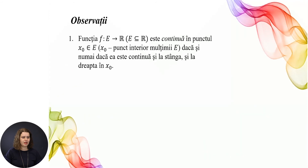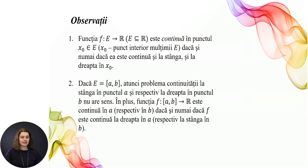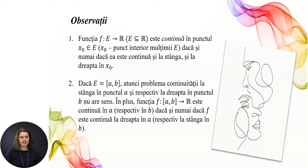Observați! Funcția f din E în R, unde E este o submulțime a lui R, este continuă în punctul x₀ care aparține lui E, x₀ un punct interior mulțimii E, dacă și numai dacă f este continuă și la stânga și la dreapta în x₀. Dacă E este egal cu segmentul [a, b], atunci problema continuității la stânga în punctul a și respectiv la dreapta în punctul b nu are sens. În plus, funcția f definită pe [a, b] cu valori în R este continuă în a dacă și numai dacă f este continuă la dreapta în a, și respectiv continuă în b dacă și numai dacă f este continuă la stânga în b.